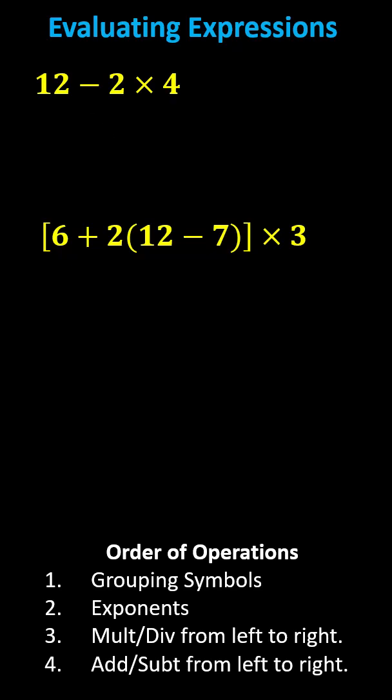Notice for the first expression, we have subtraction and multiplication. Referring to the order of operations, we always multiply and divide before we add and subtract, which indicates the first step is to determine 2 times 4, which is 8. The expression simplifies to 12 minus 8, which is equal to 4.